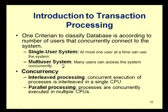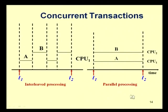Concurrency can mean interleaved processing or parallel processing. Interleaved processing means concurrent execution of processes is interleaved using a single CPU — you do A for some time, then do B, then go back to A, using a single CPU. In parallel processing you have multiple CPUs, one taking care of A and one taking care of B, executing simultaneously.